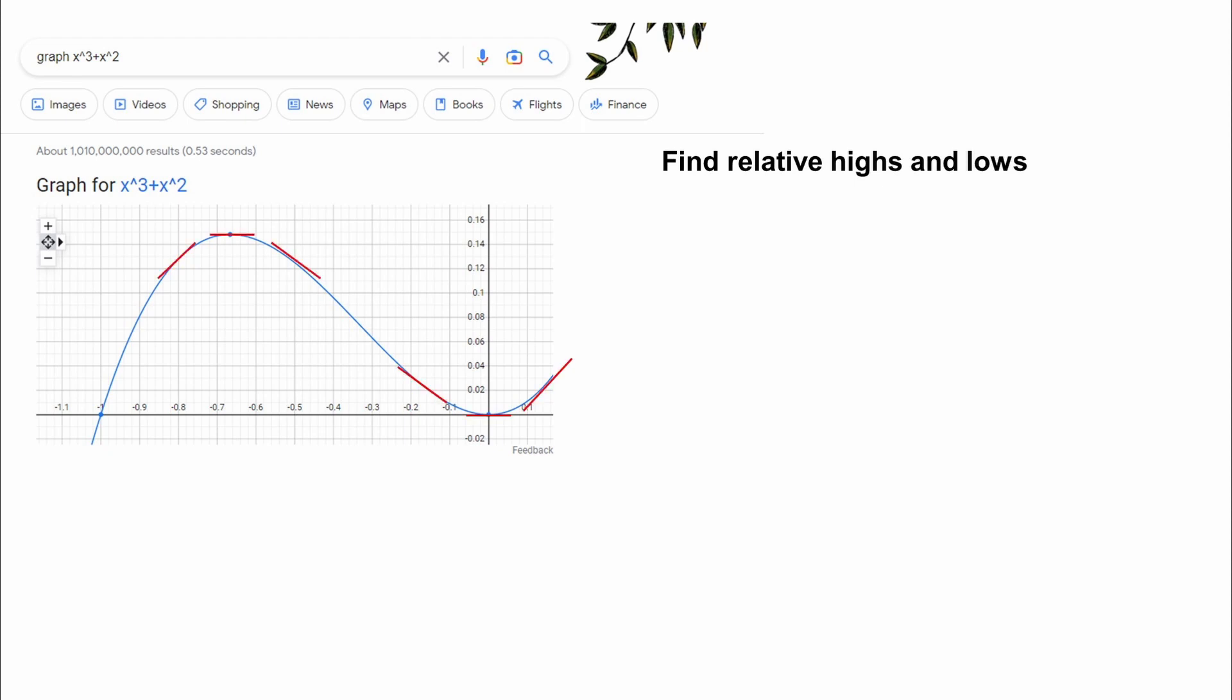So if we overlay the slope of the graph at a few different points, what do we notice? The slope is at a zero at the maximum and minimum points.